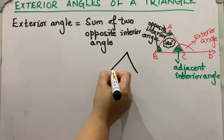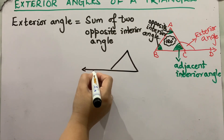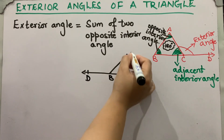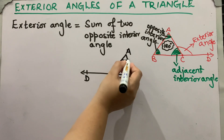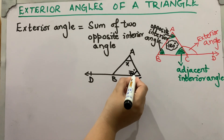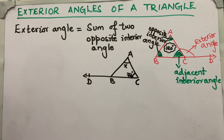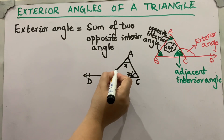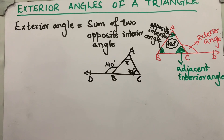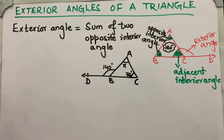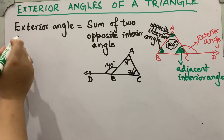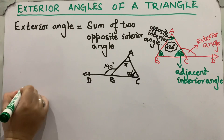An exterior angle is given. This is D, B, C, A. This angle x is equal to 72 degrees. Now we are going to find out angle x. The exterior angle given is equal to 140 degrees, so angle ABT equals 140 degrees.